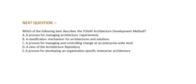Which of the following best describes the TOGAF architecture development method? Option A, a process for managing architecture requirements. Option B, a classification mechanism for architectures and solutions. Option C, a process for managing and controlling change development at an enterprise-wide level. Option D, a view of the architecture repository. And option E, a process for developing an organization-specific enterprise architecture.